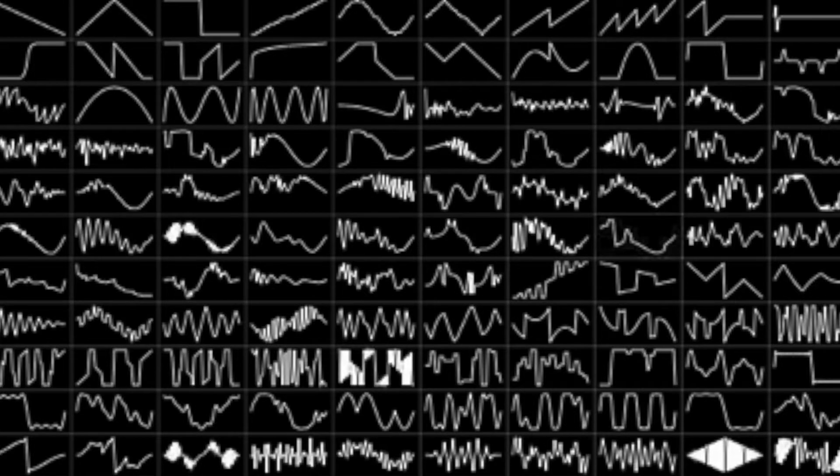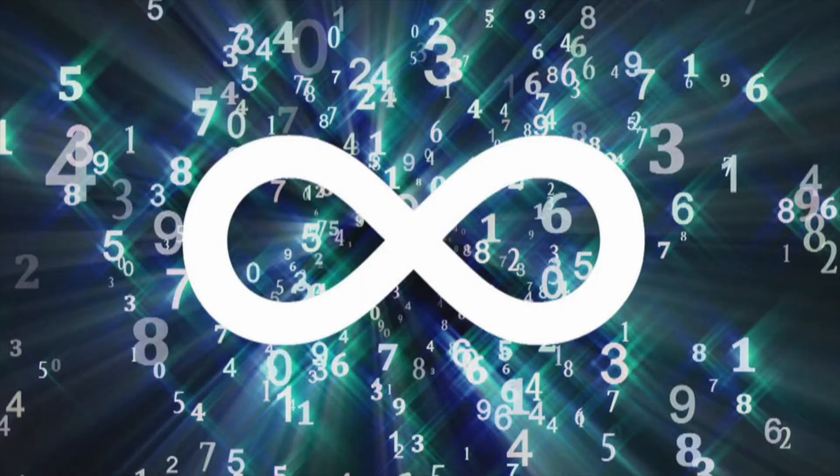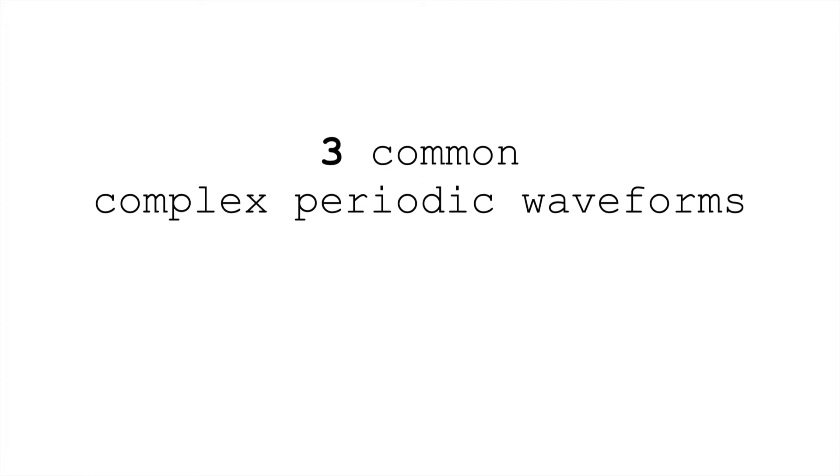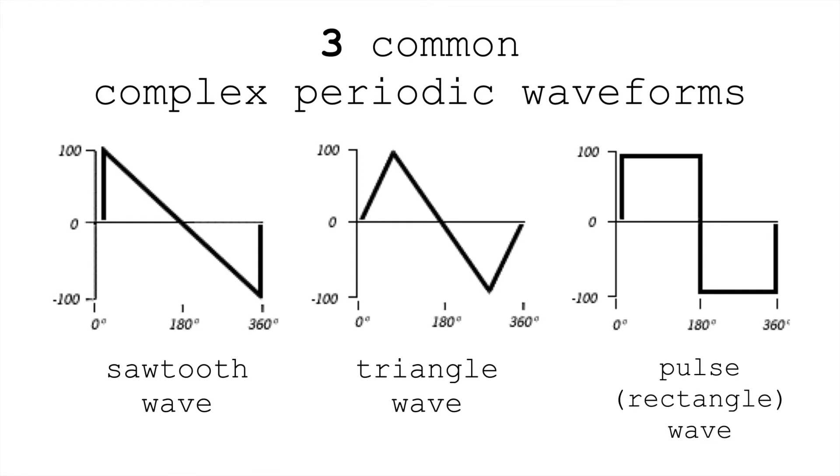There are an infinite number of possible complex periodic waveforms. Literally infinite. But there are three complex periodic waveforms that we see a lot, and it's useful to know both their shape and their harmonic construction. So the three waveforms I want to focus on are sawtooth waves, triangle waves, and pulse waves. Pulse waves are also called rectangle waves, and they're also related to square waves, which we'll talk about later.